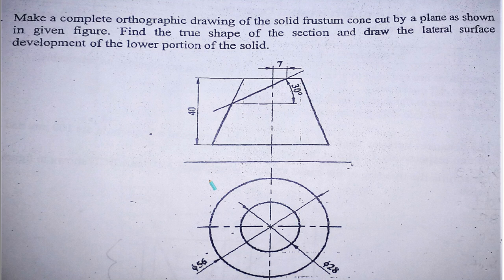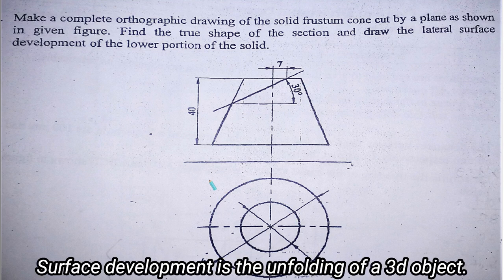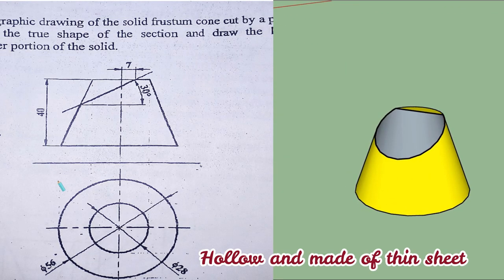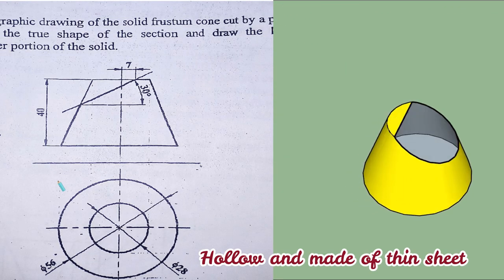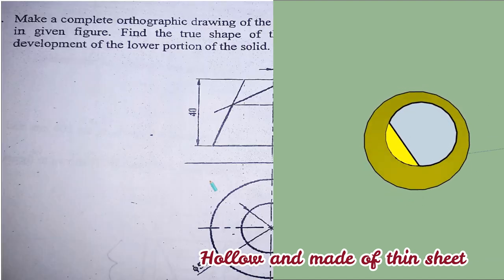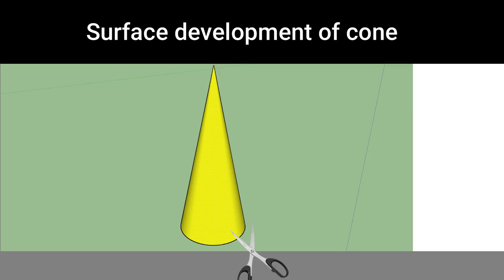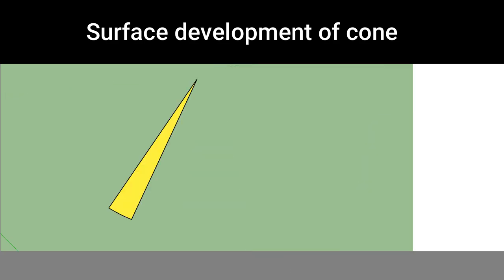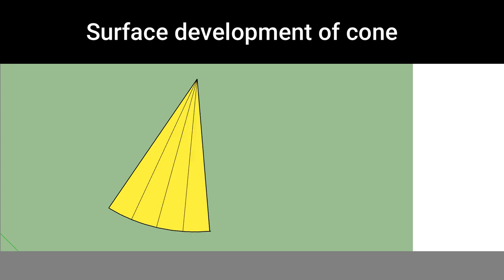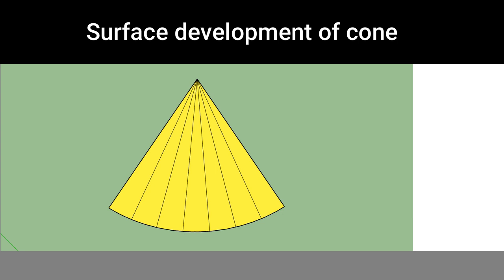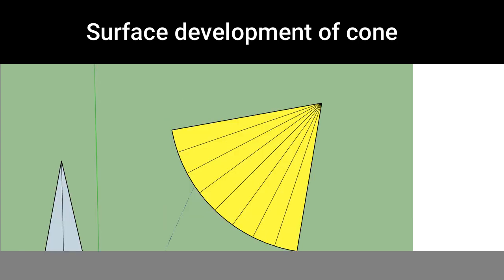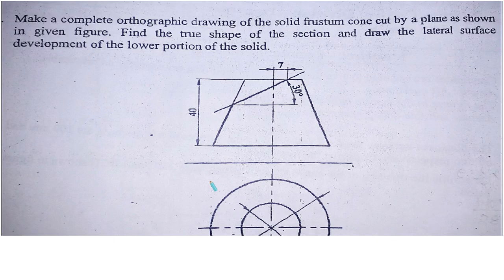So what is surface development? Surface development is the unfolding of a 3D object. That object should be hollow and made up of a thin sheet. So when we cut that object from one side and unfold the sheet completely, the shape of that unfolded sheet is called development of the lateral surfaces or surface development.